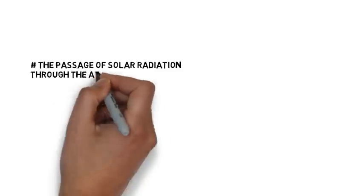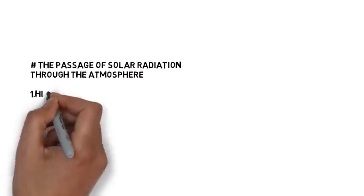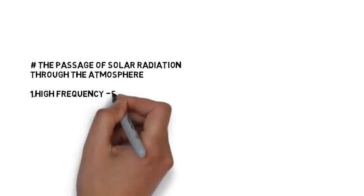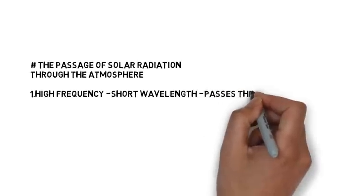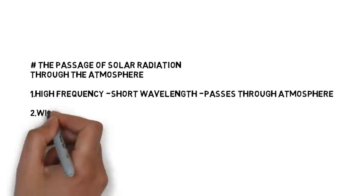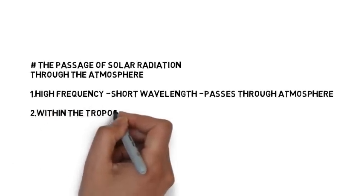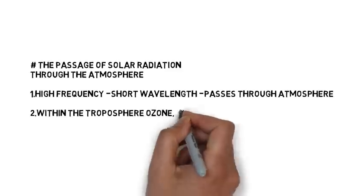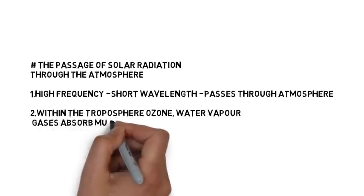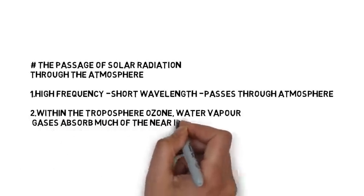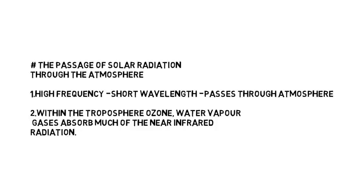The third factor is the passage of solar radiation through the atmosphere. Higher the frequency, shorter the wavelength, and short wavelength radiation easily passes through the atmosphere. Within the troposphere, there is the ozone layer and water vapour — gases that absorb much of the infrared radiation. Small suspended particles scatter the visible spectrum both to space as well as towards the earth's surface. This scattering also adds colour to the sky.